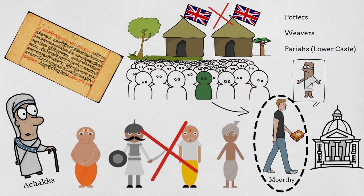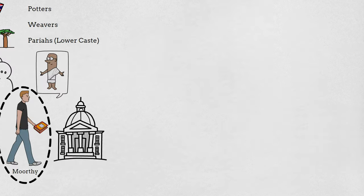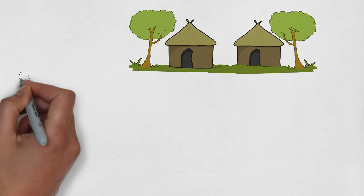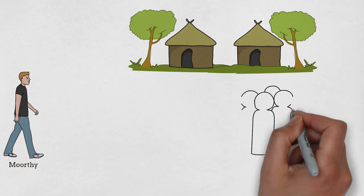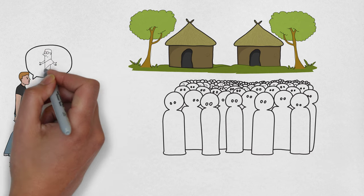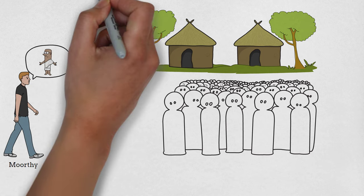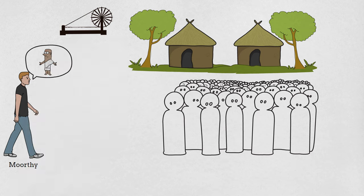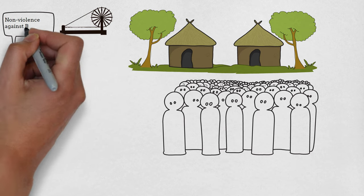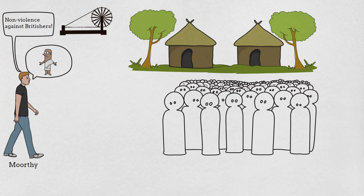Moorthy also started condemning the British lifestyle that Indians had adopted. Now back in his village, he starts convincing others to follow the footsteps of Mahatma Gandhi — convincing people to take up wheel spinning every morning, talking about non-violence, and how the Britishers had looted India and its culture.